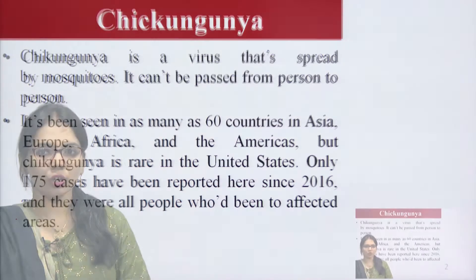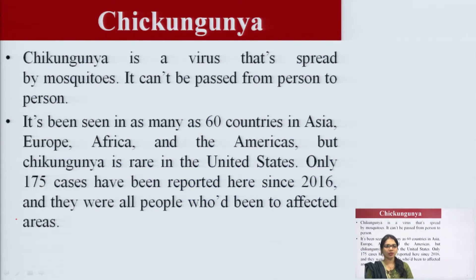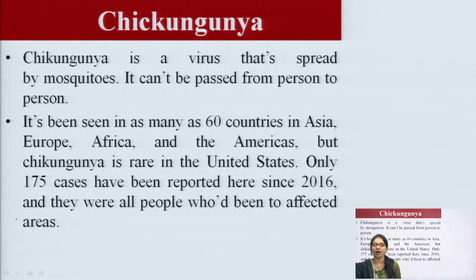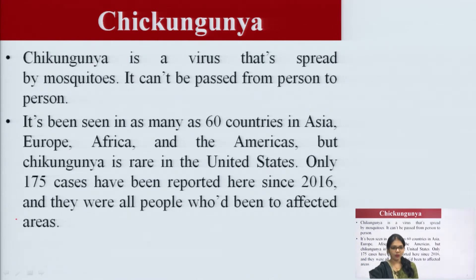Chikungunya is a virus spread by mosquitoes. It can be passed from person to person and has been seen in many of the 16 countries in Asia, Europe, Africa, and the Americas. However, Chikungunya is rare in the US, with only 175 cases reported since 2016.